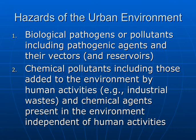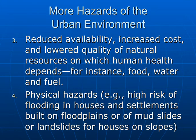And there are hazards of the urban environment. These include biological pathogens or pollutants, including pathogenic agents and their vectors and reservoirs. There are chemical pollutants, including those added to the environment by human activities such as industrial waste. There is reduced availability, increased cost, and lowered quality of natural resources on which human health depends — for instance, food, water, and fuel. There are physical hazards; an example is the high risk of flooding in houses and settlements built on floodplains.